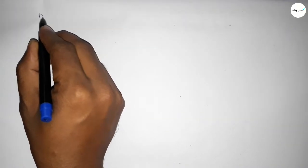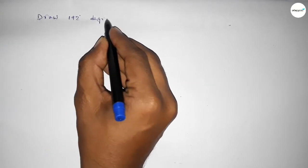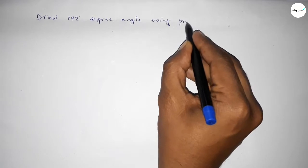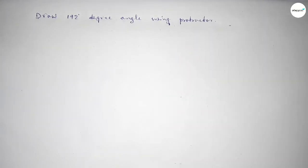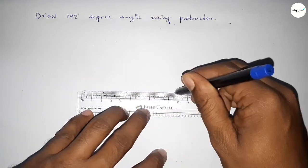Hi everyone, welcome to SI Share Classes. Today in this video we have to draw a 192 degree angle by using a protractor. So let's start the video. First of all, we have to draw here a straight line of any length.